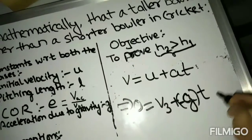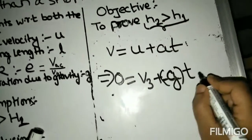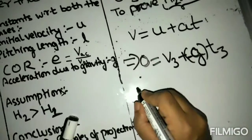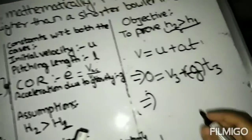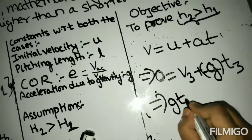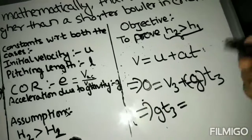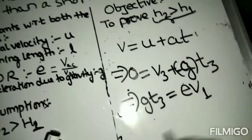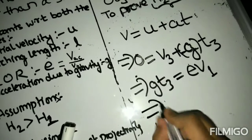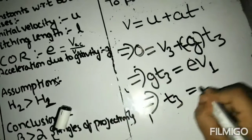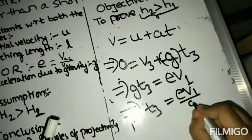So gt3 and t, let's call this time as t3. Now, let's bring this thing over here: gt3 and v3, we know it's equal to e into v1. It gives us t3 as ev1 by g.